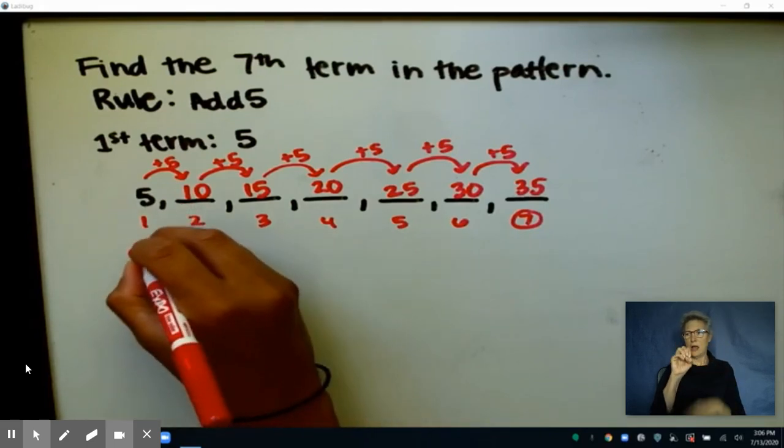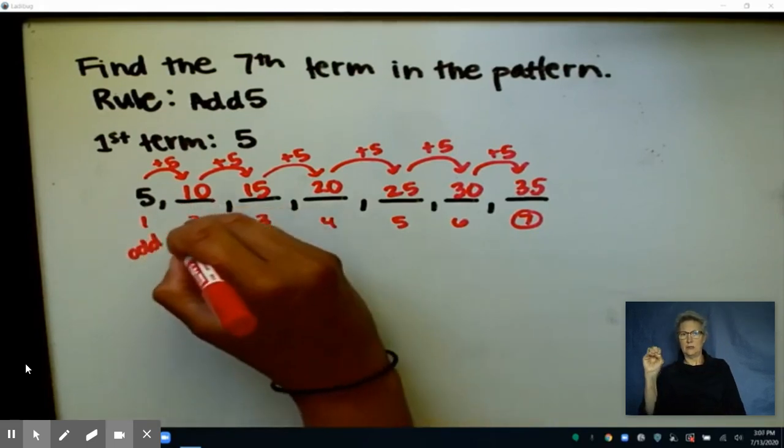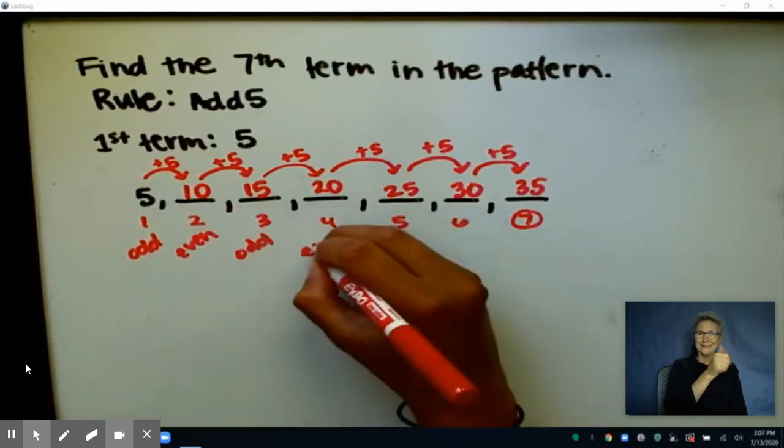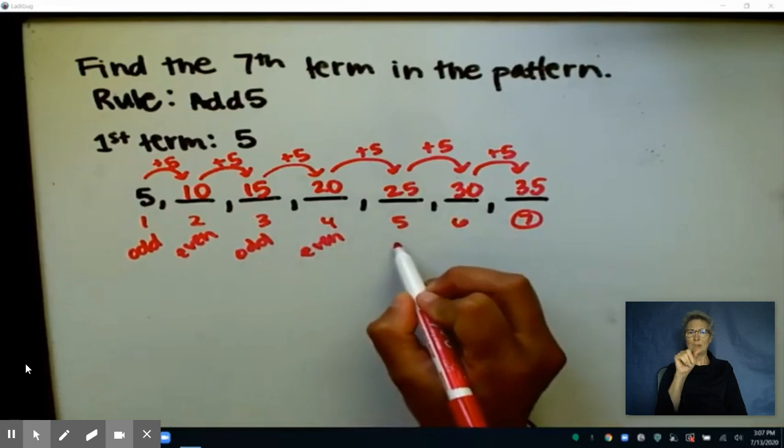So when I have 5 here, my number is odd. 10 is even. 15 is odd again. 20 is even again, and that pattern continues, right?